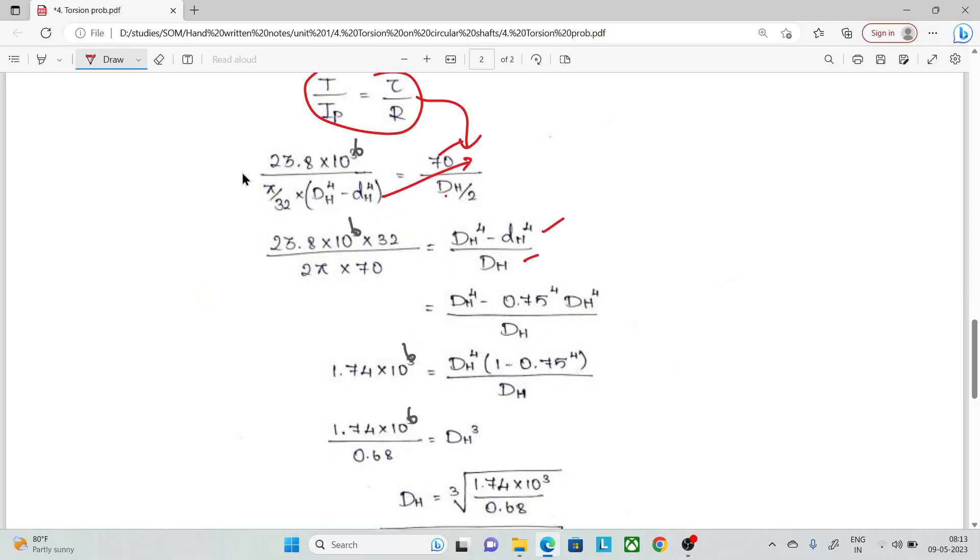Let's rearrange: 23.8 × 10⁶ on the left, and 32 divided by 2π × 70 on the right. Now we substitute: d_i = 0.75 times d_h. This gives us 1 - (0.75)⁴, which equals 0.68.